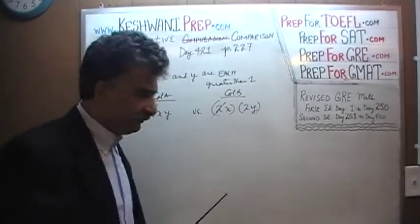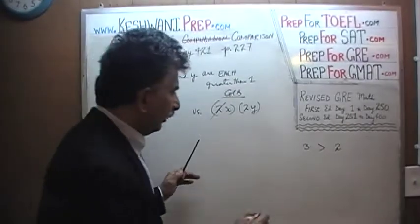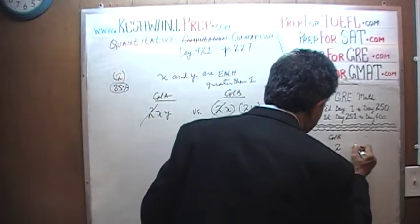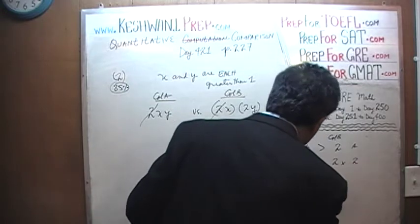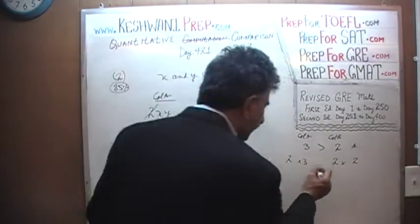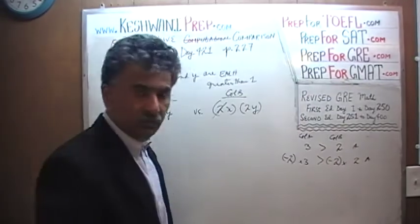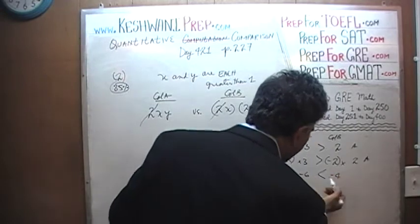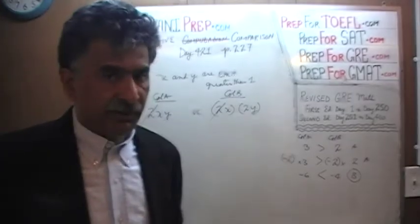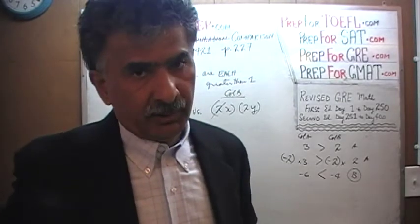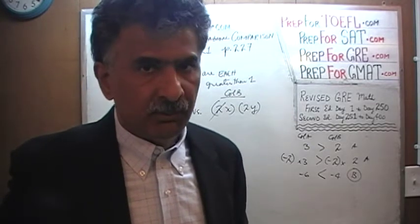You cannot divide or multiply both columns by a negative number. Here's a quick demonstration: we know that 3 is more than 2. If you multiply both by positive 2, column A is still bigger. But if you multiply both by negative 2, you get negative 6 versus negative 4 — now negative 4 is bigger, so the answer flips to B. We cannot multiply or divide both columns by negative numbers, but we can by any positive quantity.